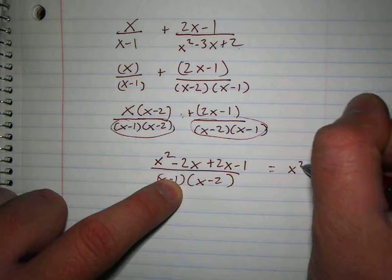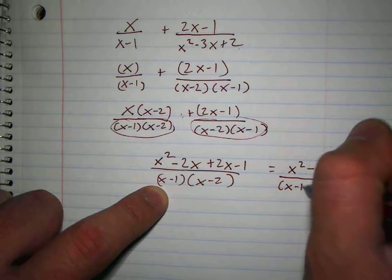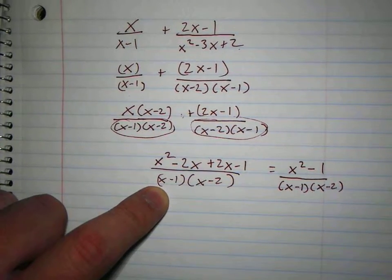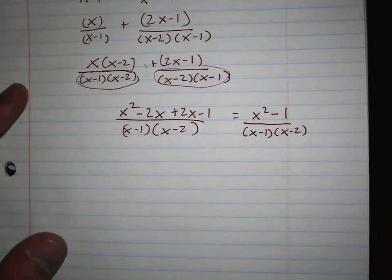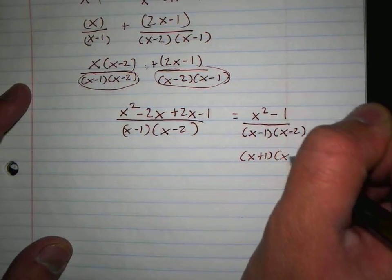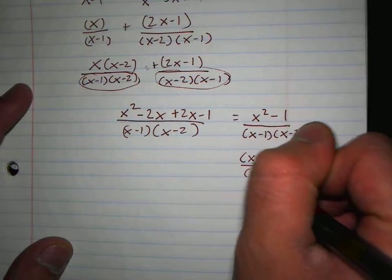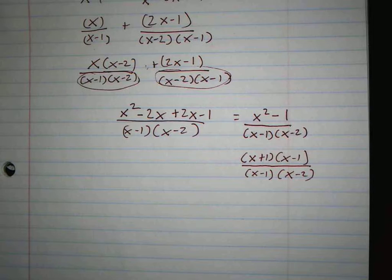Negative two x plus that two x cancel, right? So I get x squared minus one over x minus one, x minus two. Does anything factor? x squared minus one, difference of squares. So that would be x plus one, x minus one. And then does anything cancel?